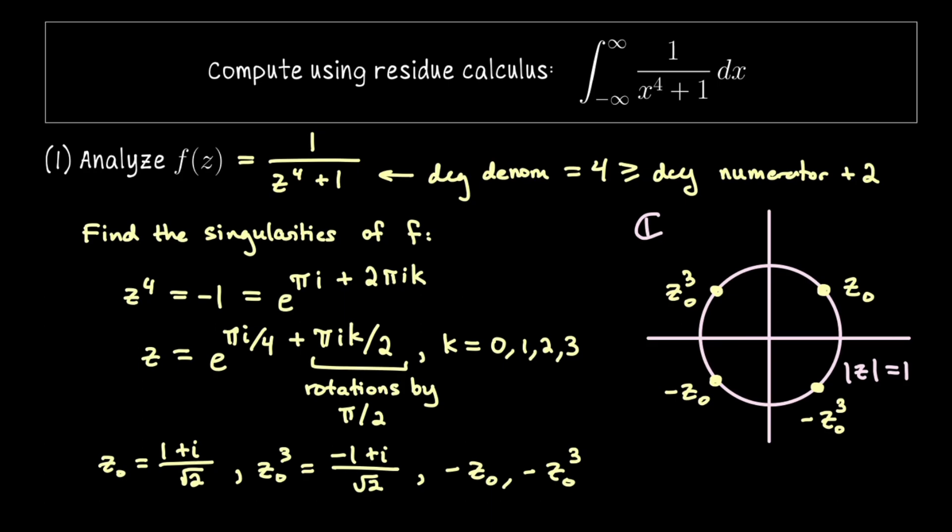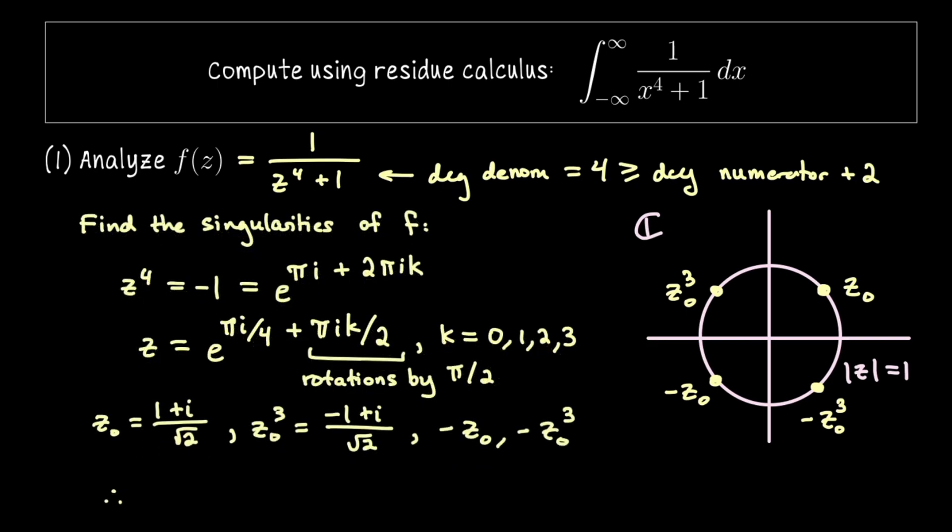Let me say one more thing about how we can write f now that we've identified these four singularities. I'm going to give myself a little bit more room. We could take f now and write the denominator as a product of four factors. So I can say f is 1 over z minus z naught z plus z naught z minus z naught cubed z plus z naught cubed. And notice here each singularity has order 1.